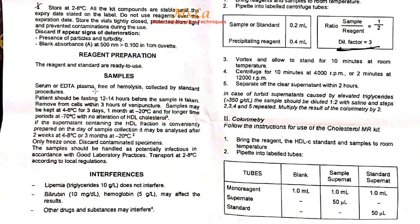Collect venous blood for the HDL test. Process the sample within 3 hours. Separate serum properly. If you need to store the serum, keep it at 2 to 4 degrees Celsius, where it can be stored for up to 3 days.